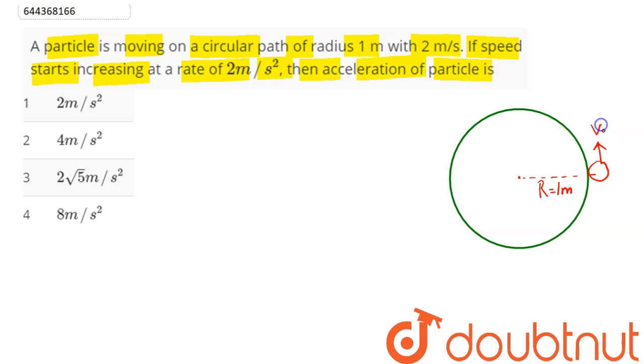Speed is given here as 2 meter per second. So here net acceleration is being asked. Hence, we can say centripetal acceleration here will be equal to V square by R. Here, velocity is given as 2 and radius is 1. So, 4 by 1 comes as 4 meter per second square.